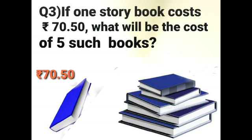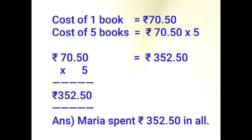Our next question: if one storybook costs rupees 70.50, what will be the cost of 5 such books? In the picture it is shown that the cost of one book is rupees 70.50. You have to find the cost of more number of books, so we will multiply. First, write the statement: cost of one book is equal to rupees 70.50.